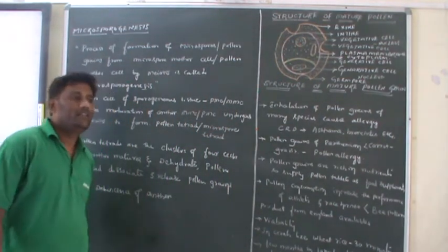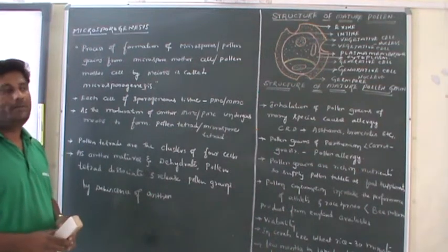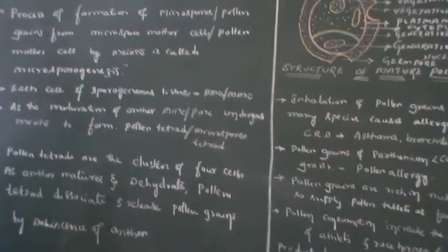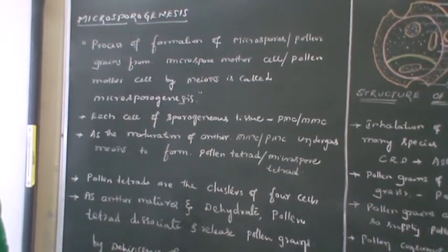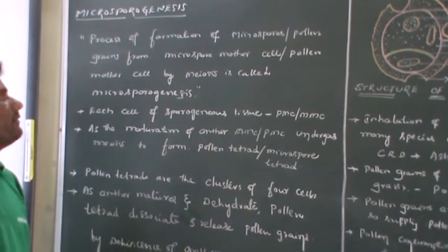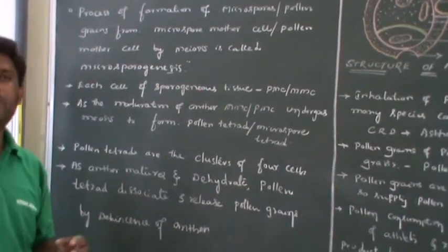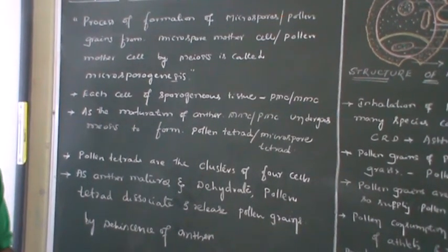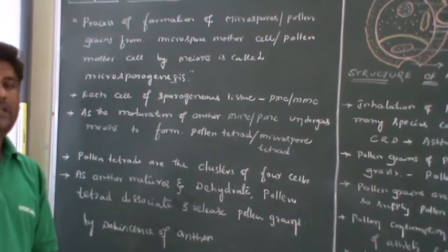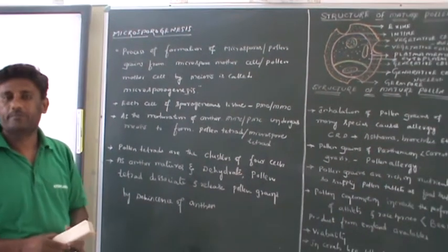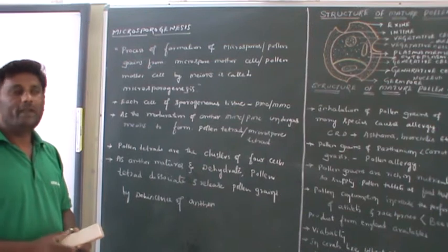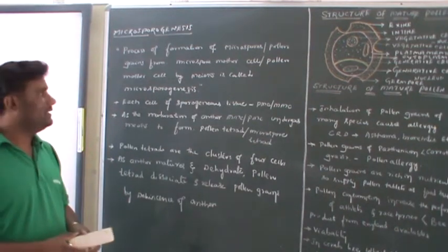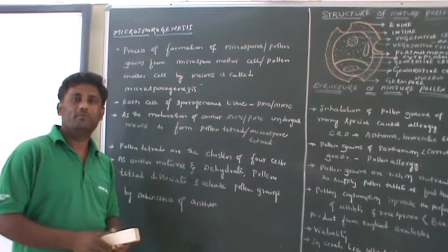By knowing this, we can easily define microsporogenesis. Microsporogenesis is the process of formation of microspores or pollen grains from the microspore mother cell or pollen mother cell by undergoing the process known as meiotic division.